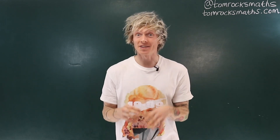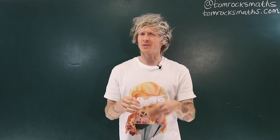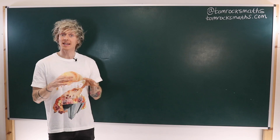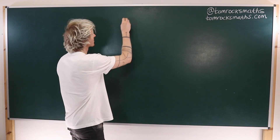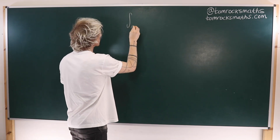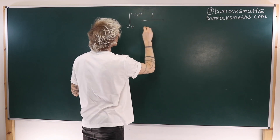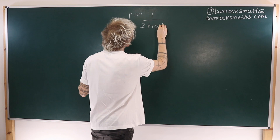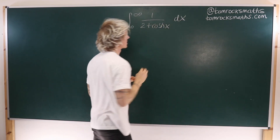Hello maths fans! Dr. Tom Crawford here at the University of Oxford and today we're doing an integral from the MIT integration bee. The integral we're looking at is the following: we want to integrate from naught to infinity 1 divided by 2 plus cosh of x with respect to x.